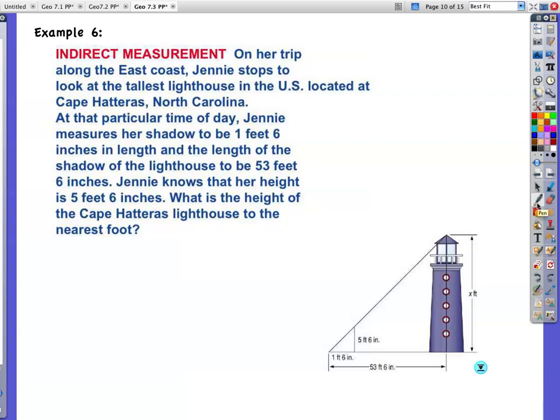On her trip along the East Coast, Jenny stops to look at the tallest lighthouse in the U.S. located at Cape Hatteras, North Carolina. At that particular time of day, Jenny measures her shadow to be one feet, six inches in length and the length of the shadow of the lighthouse to be 53 feet, six inches. Jenny knows her height is five feet, six inches. What is the height of Cape, I don't know how to say that, Hatteras, lighthouse to the nearest foot. Okay, so here we go.